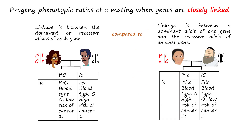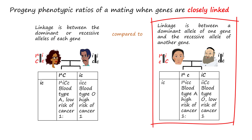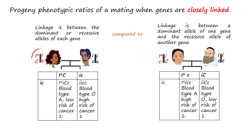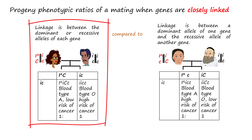Let us look at two completely linked polymorphisms found in coding regions or genes for a mating between a heterozygous and a homozygous recessive individual. Since completely linked polymorphisms will be transmitted to the progeny together, this mating will probably result in an F1 phenotypic ratio of 1 to 1. However, the linkage phase will determine the phenotypes. In one phase of linkage, the probable ratio is one blood type A with a low chance of cancer to one blood type O with a low probability of cancer. In the other linkage phase, the probable F1 phenotypic ratio is one blood type A with a low chance of cancer to one blood type O with a high likelihood of cancer.